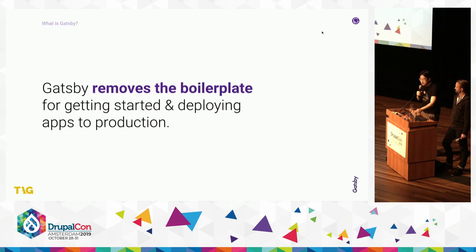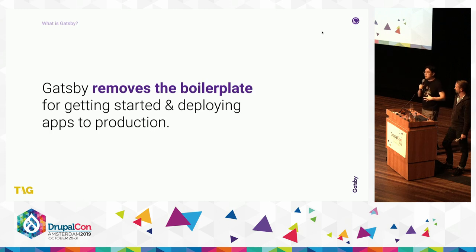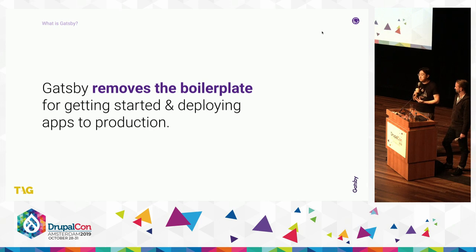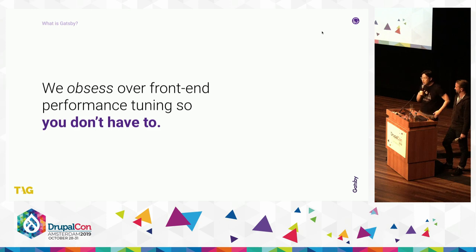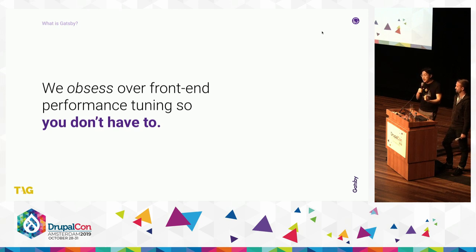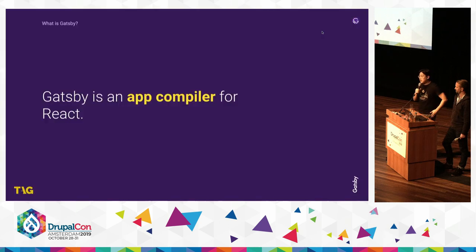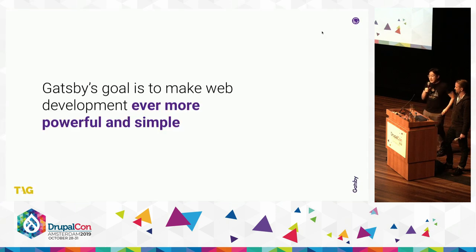Your experience as a developer is very easy, and Gatsby removes the boilerplate. Gatsby is opinionated about ways to get started — similar to the concept of create React app in the React ecosystem — and it's intended to get you deploying as quickly as possible to production. As the Gatsby team, we obsess over front-end performance tuning so you don't have to. We make it much easier so you don't have to worry about things like code splitting or lazy loading of images. In short, Gatsby is an app compiler for React, and Gatsby's goal is to make web development ever more powerful and simple.